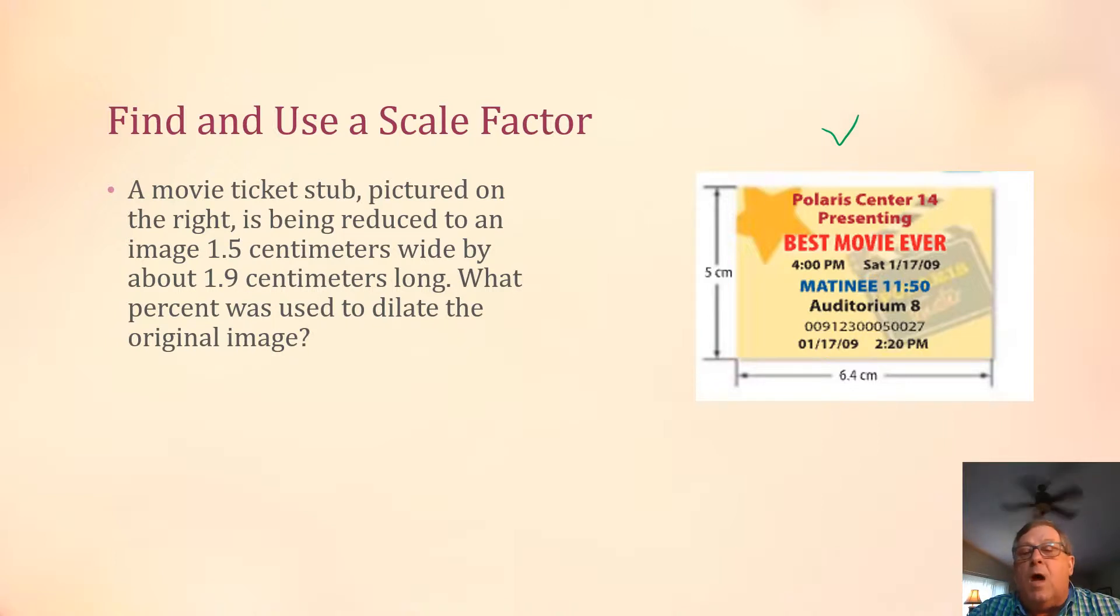We are 5 centimeters wide and 6.4 centimeters long, and we're told that this movie ticket stub is being reduced to an image 1.5 centimeters wide by 1.9 centimeters long. What percentage was used, or in other words, what was the scale factor expressed as a percentage used to dilate the original image? So rather than being 5 centimeters wide, it's going to be 1.5 centimeters.